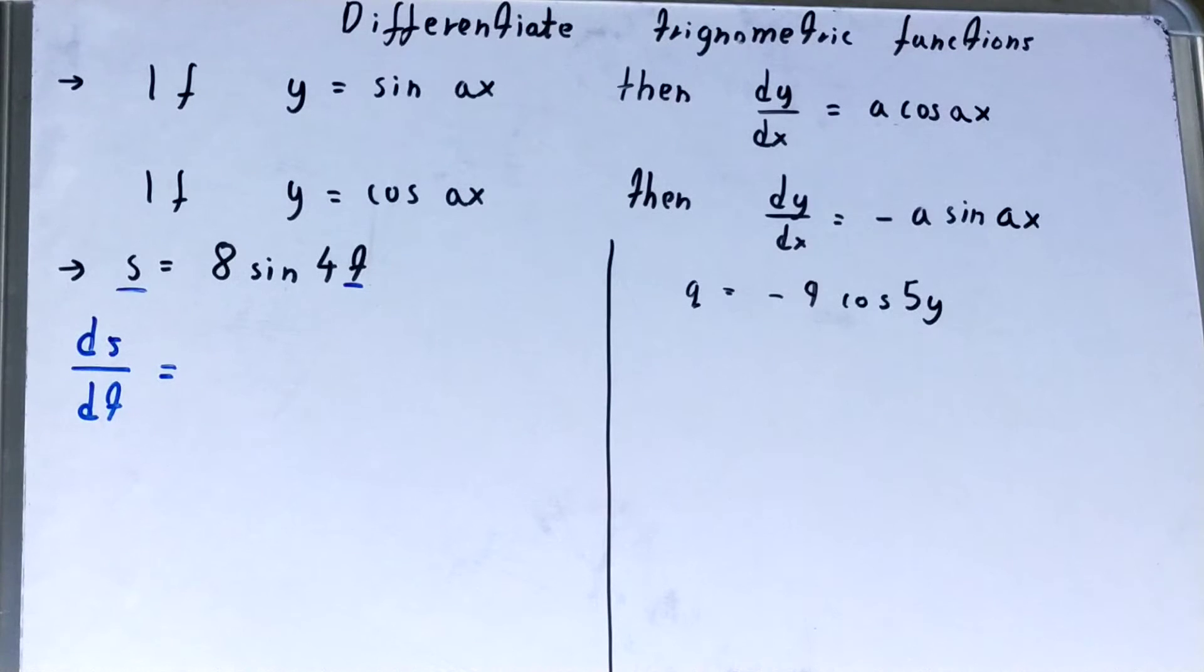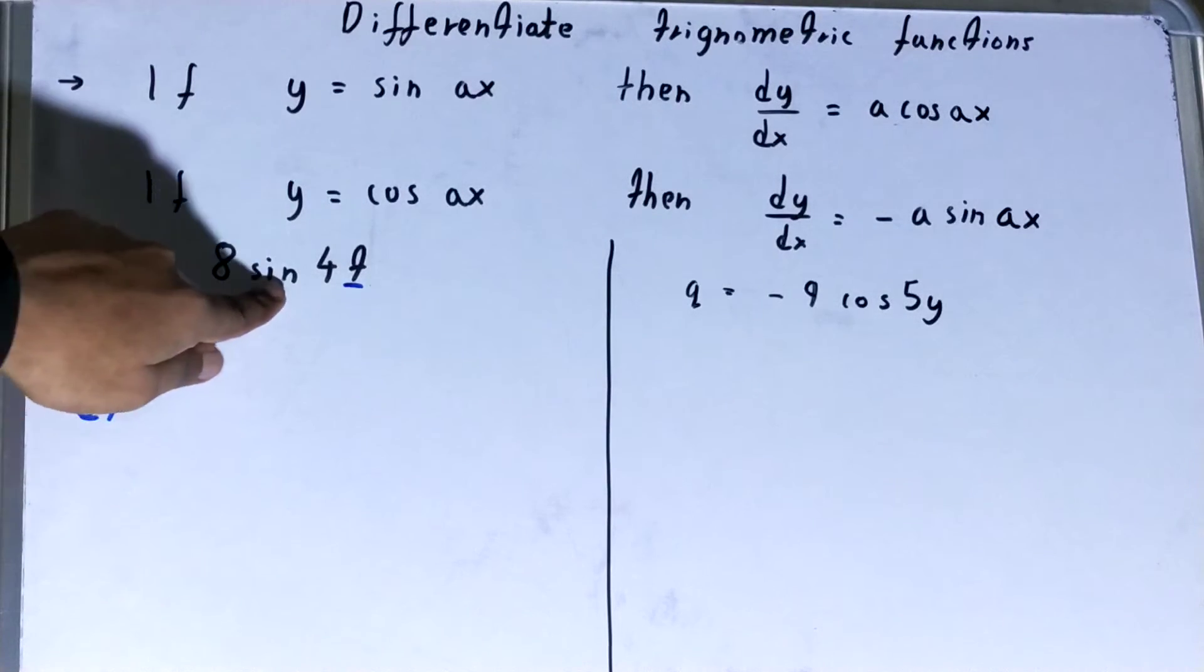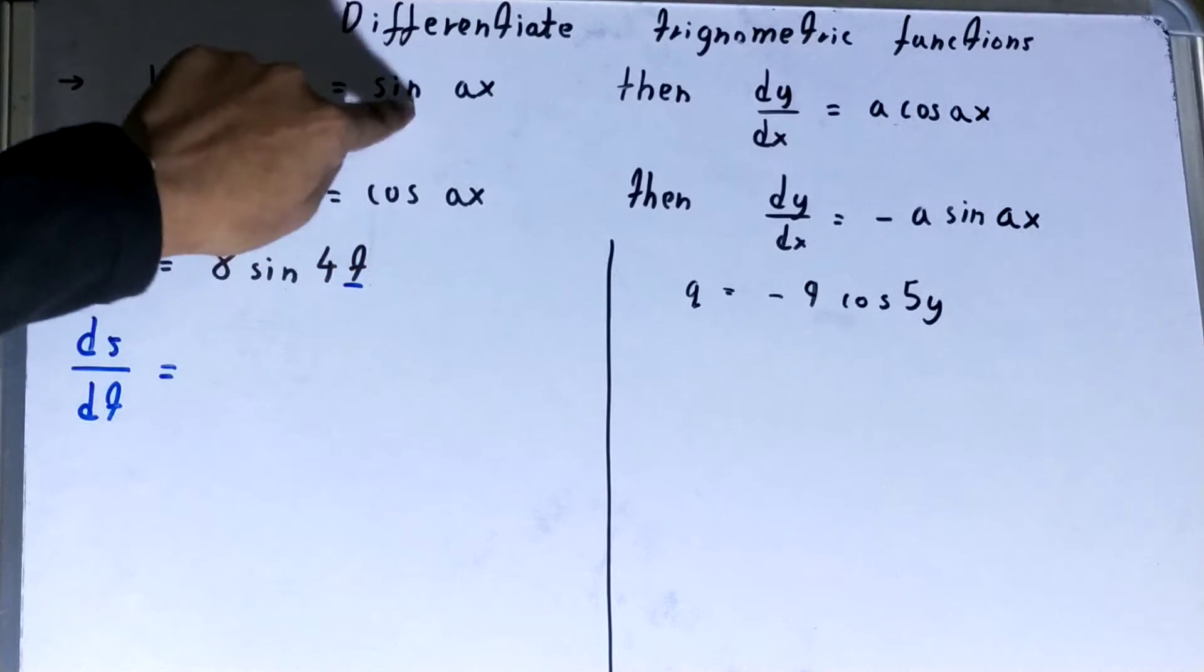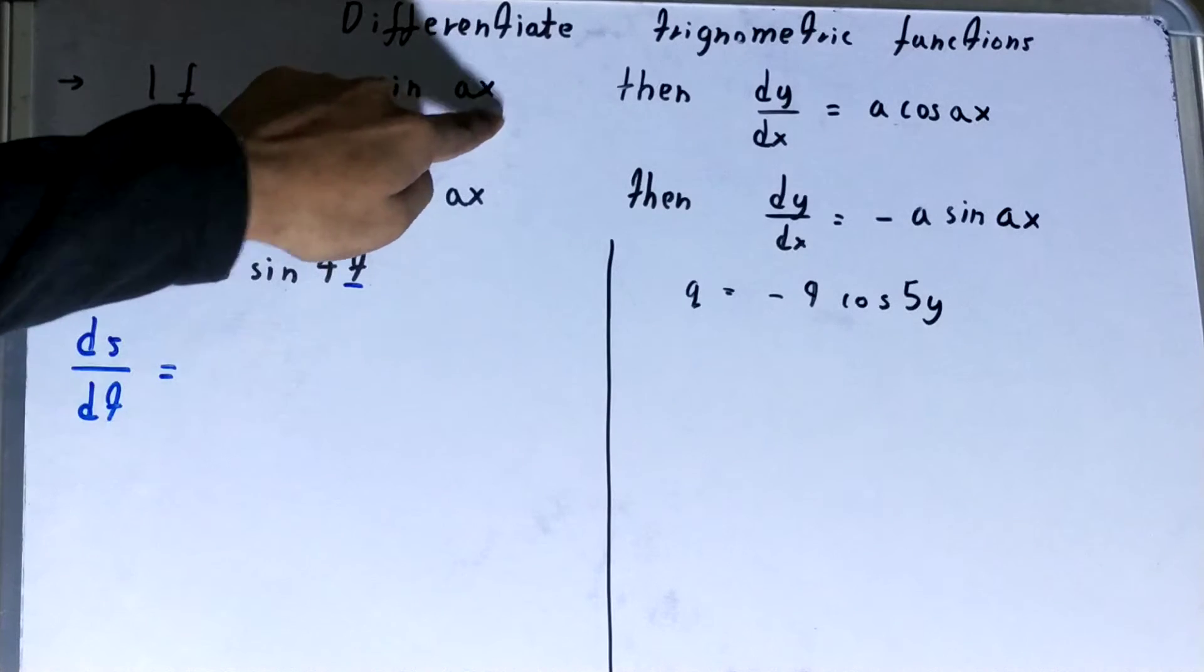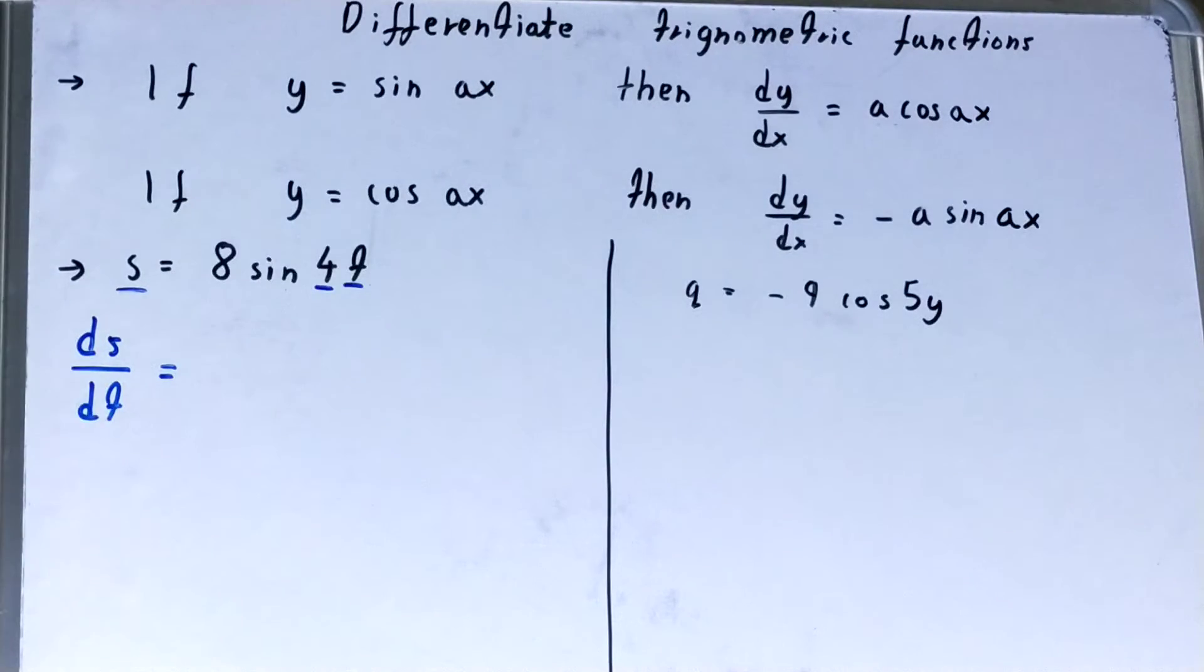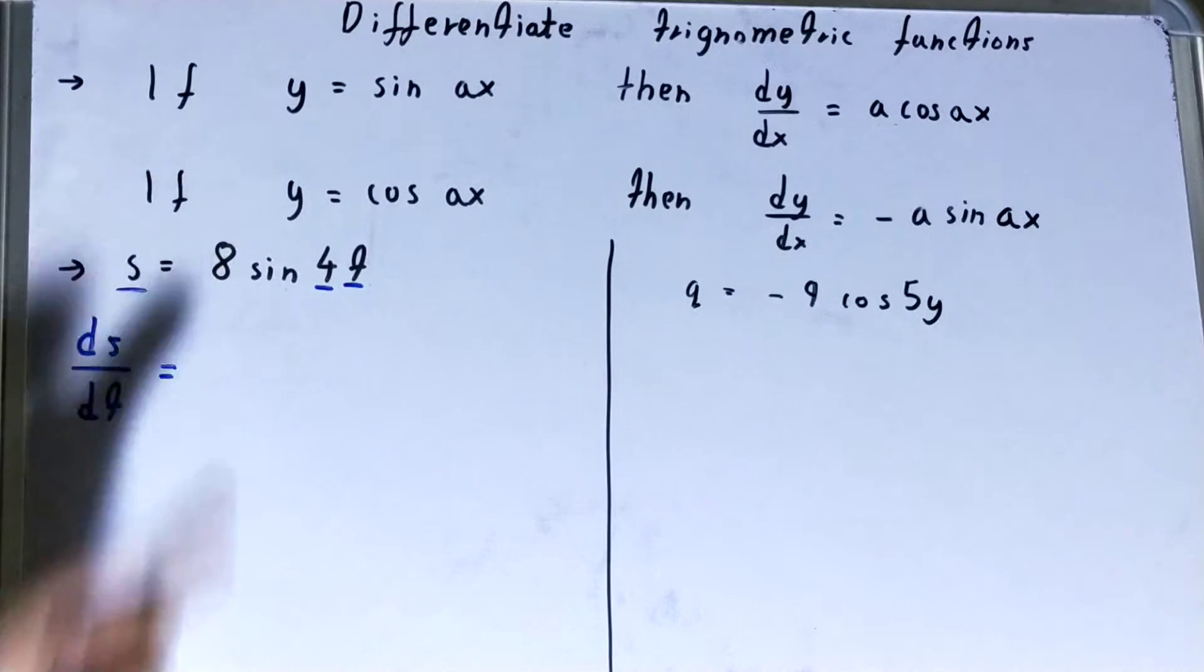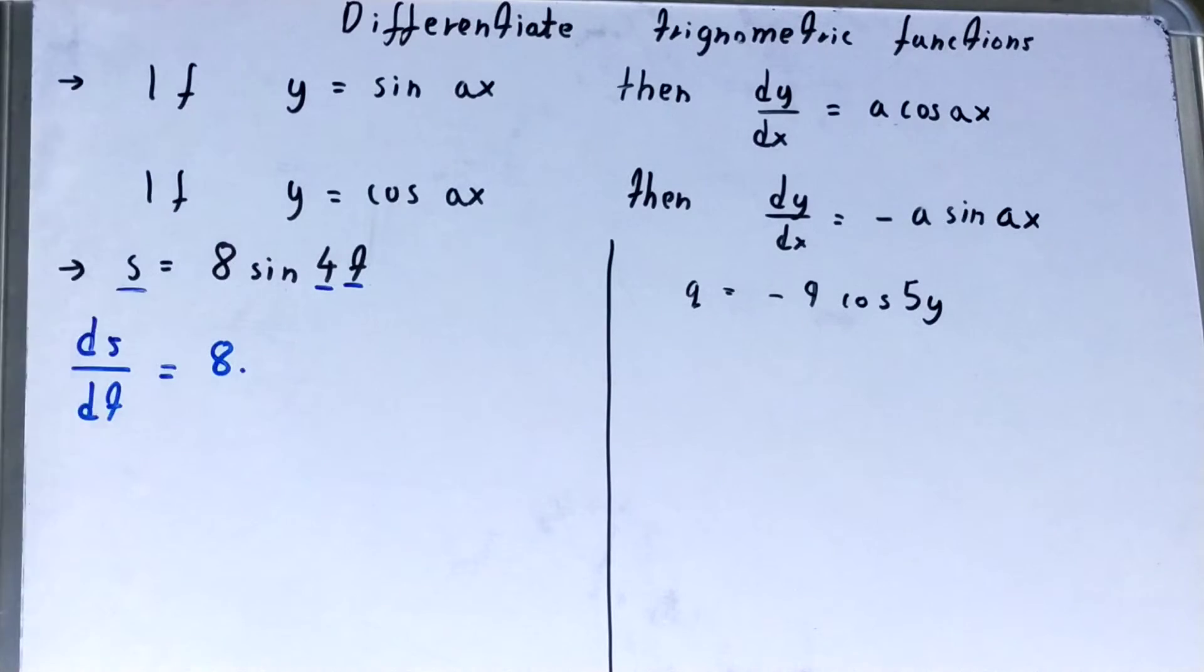Which formula will be used? According to our problem we are having sine, so we'll use the first formula. What is our a? Our a is 4, and what is our x? Our x is t. And this coefficient, this extra coefficient, you will write it normally like this, you will not touch it.